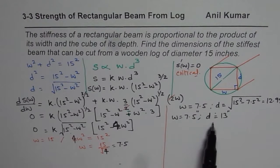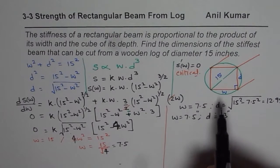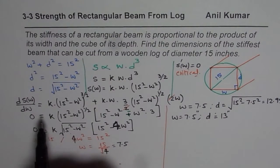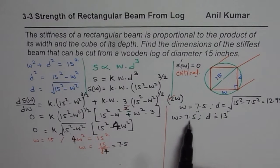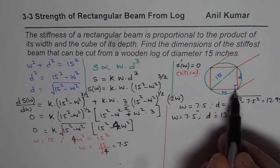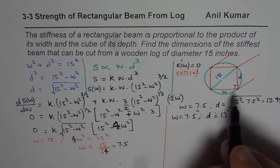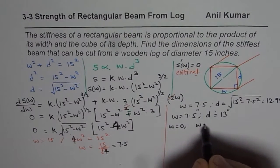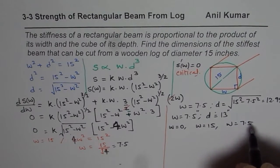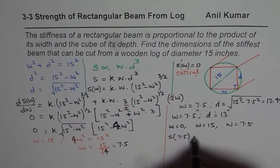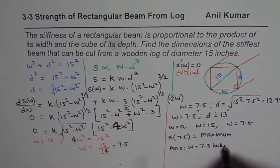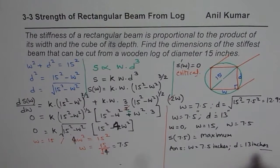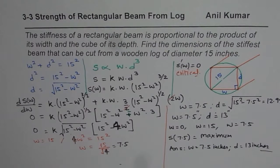These dimensions give maximum stiffness for the beam. You can also verify the answer by substituting different values of width — width = 0, width = 15, and width = 7.5 — and comparing the stiffness values. Stiffness at W = 7.5 will be maximum. So the final answer is width = 7.5 inches and depth = 13 inches. I hope it's absolutely clear. Thank you and all the best.